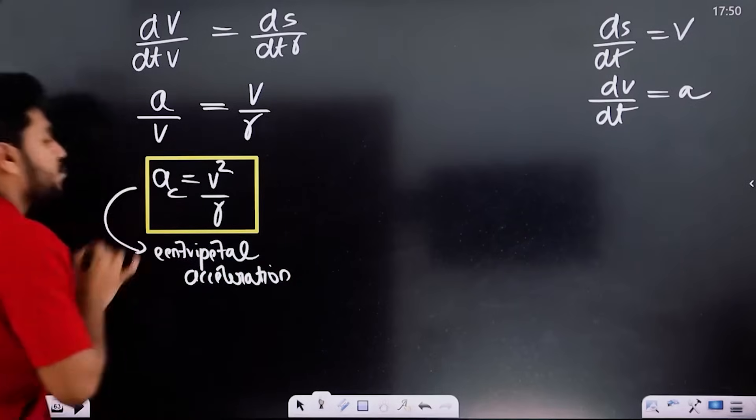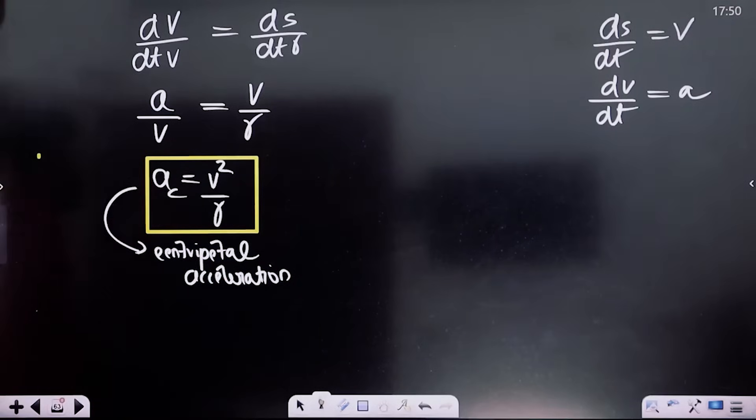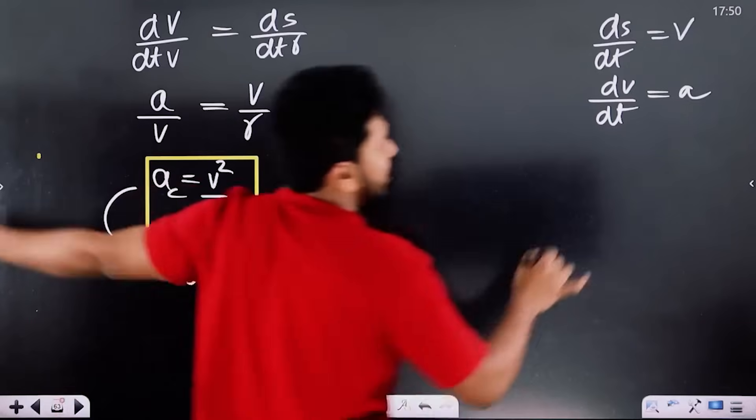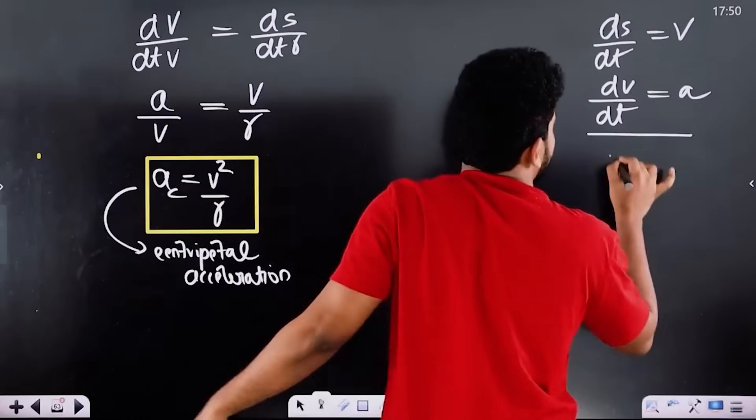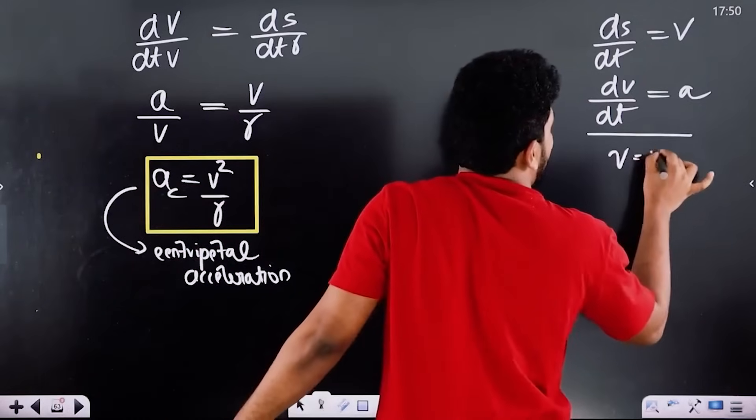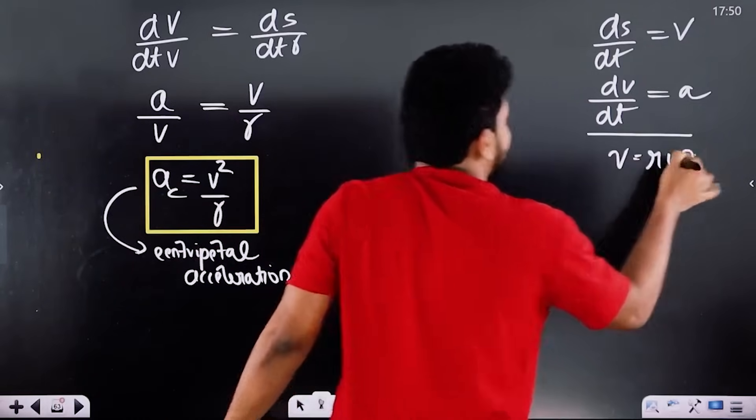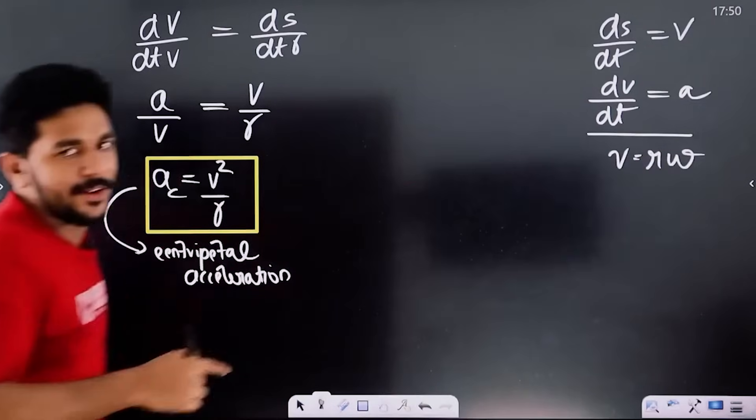This is not a big problem — this is the formula. V equals R times omega, where omega is the angular velocity.